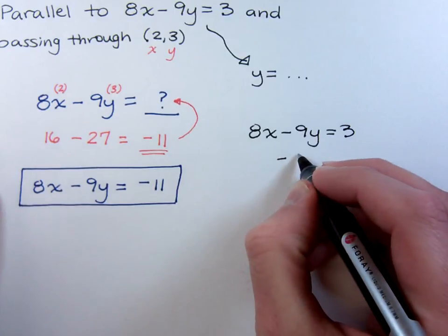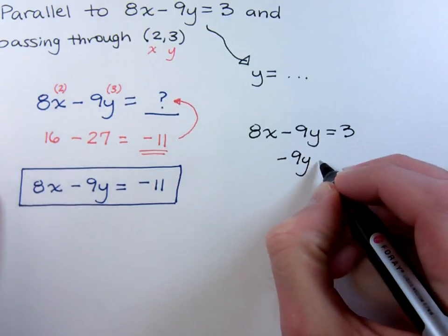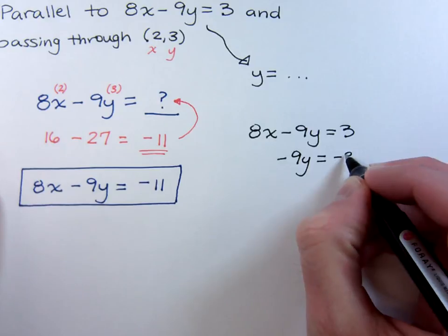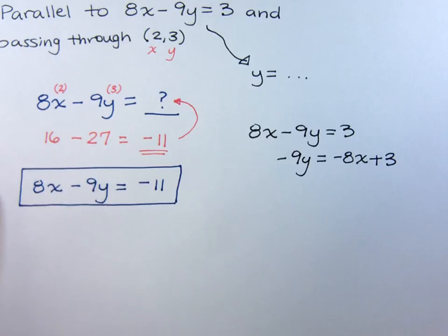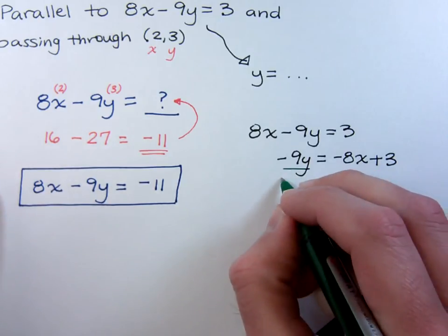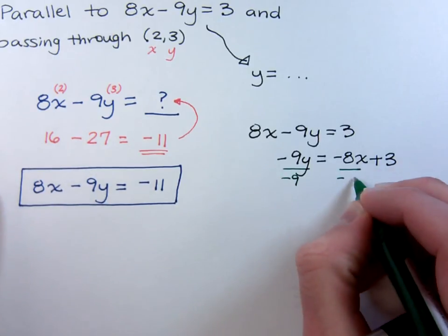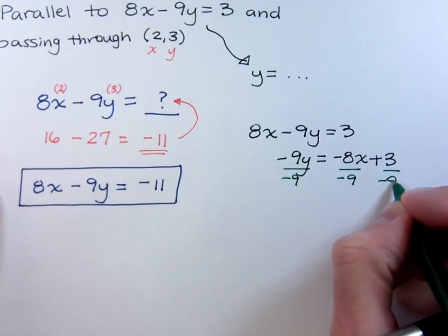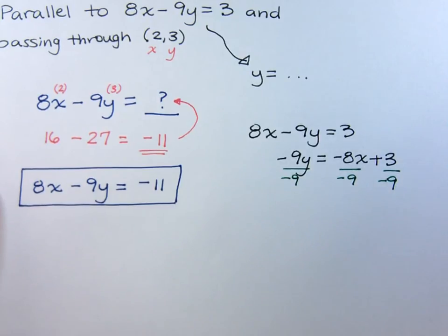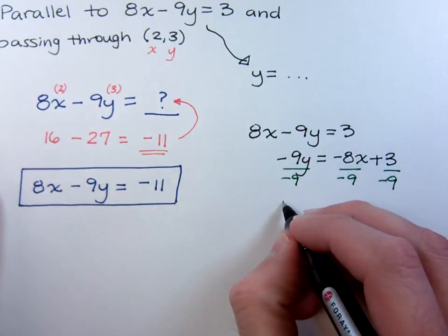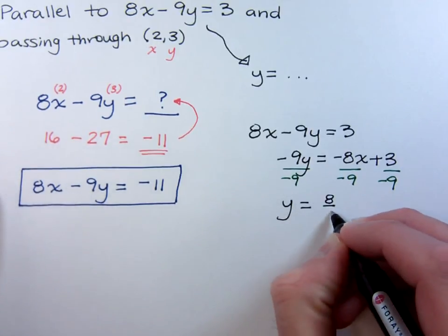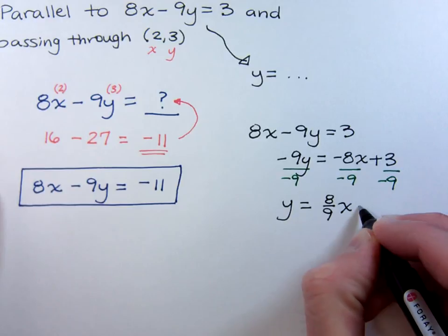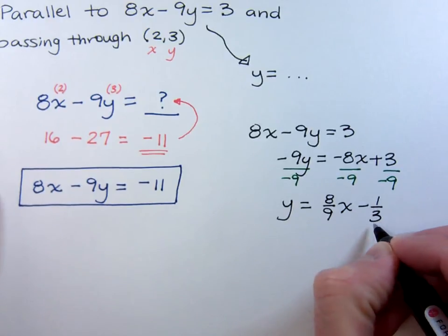Subtract the 8x. So negative 9y equals negative 8x plus 3. Divide everything by the coefficient of y. So divide everything by negative 9. And you have that y is equal to a positive 8 ninths x minus 1 third.